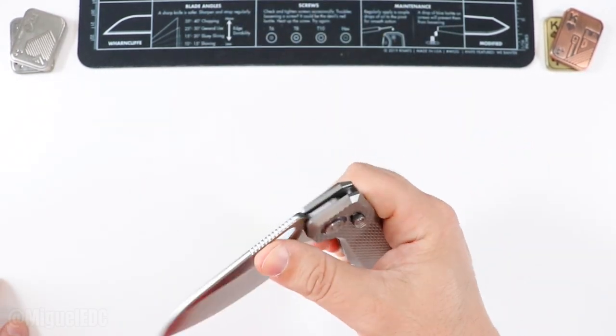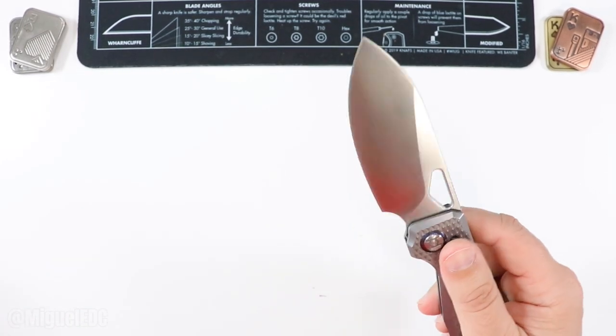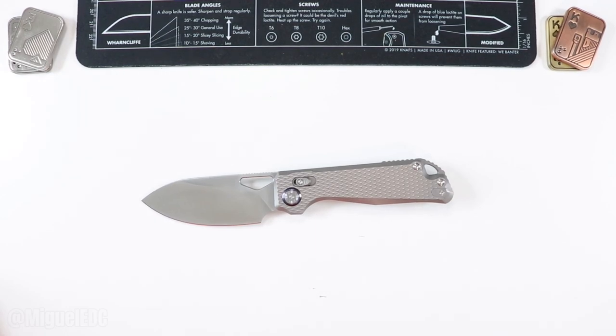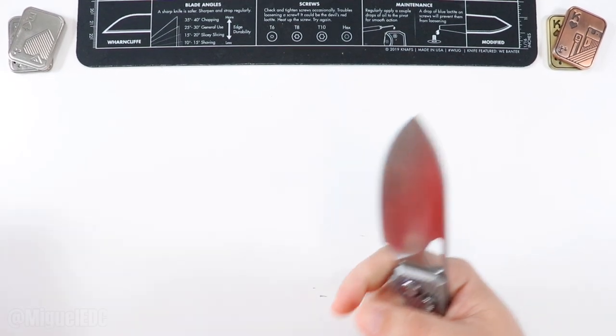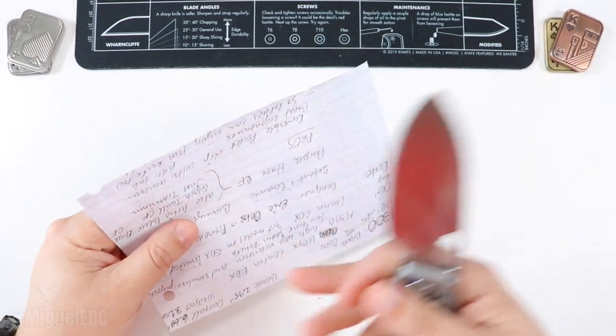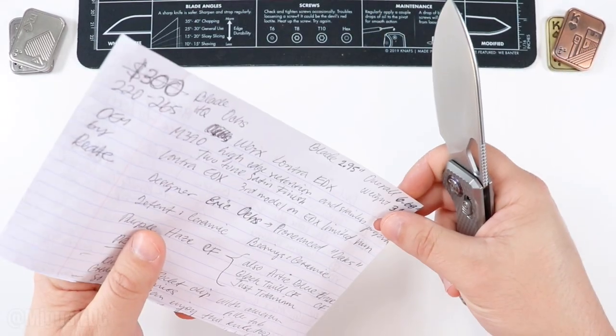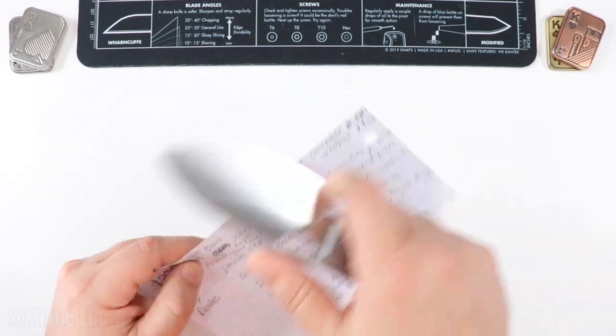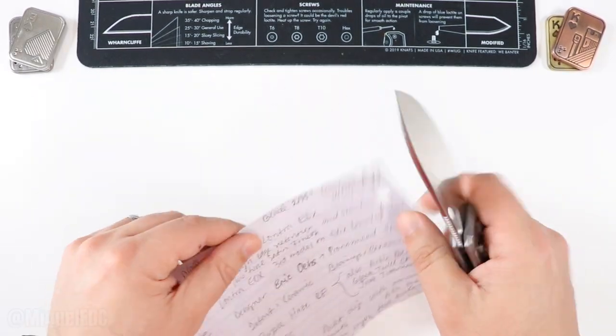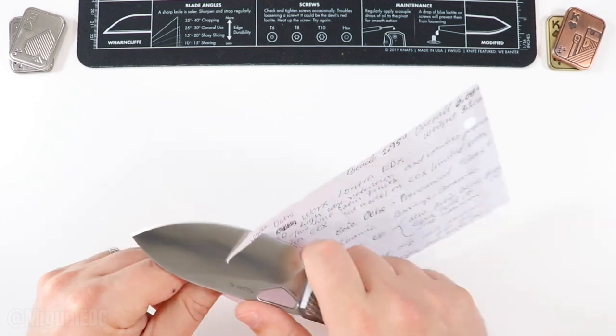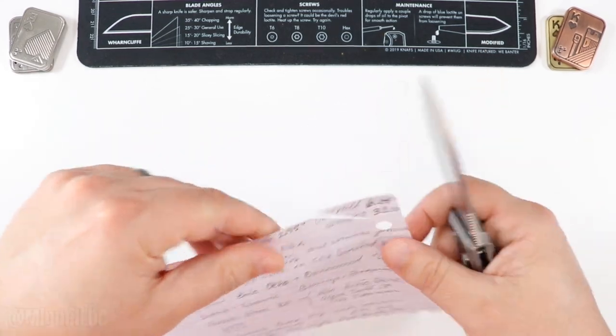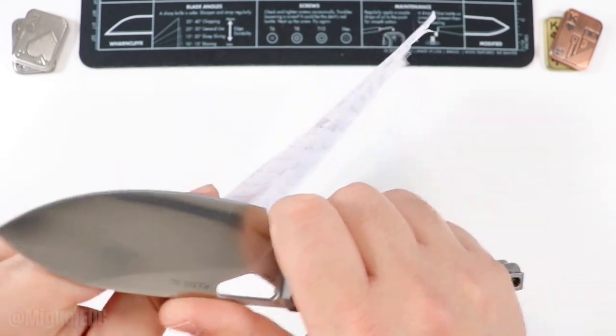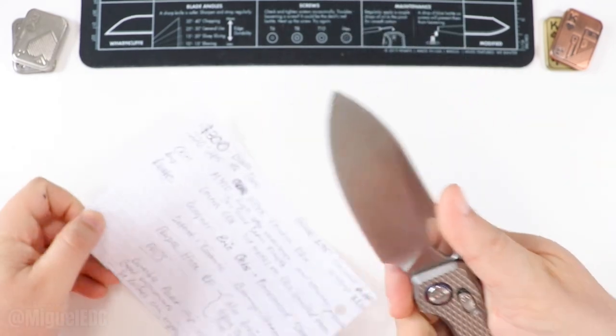But yes, this one is of course going to be seeing some use. As a matter of fact, let's go ahead and do a quick scientific paper cutting test and cardboard cutting test as well. I got some everyday notebook paper right here with my chicken scratch from another review on here. So yeah, just going to go ahead and see how this guy slices the paper. Oh, these books. Yeah, this thing is going to go through the paper like a laser beam really.